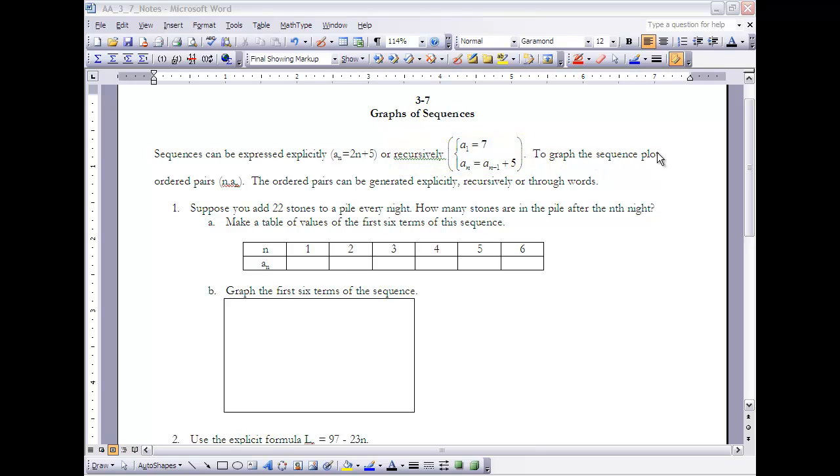To graph the sequence, plot ordered pairs (n, a_n). If you think about a sequence, the x-value is always the term number and the y-value will always be the value of that sequence. For instance, in this sequence when n is 1, a_1 = 7, so the ordered pair (1, 7) would be plotted when we graph that particular sequence.